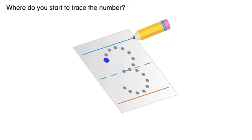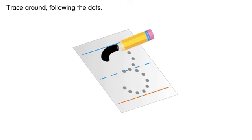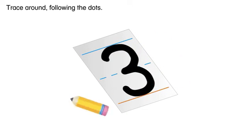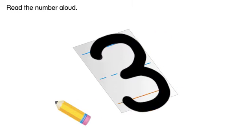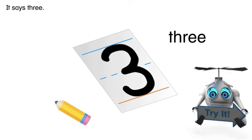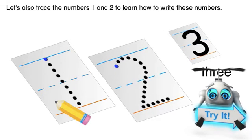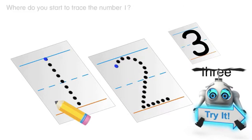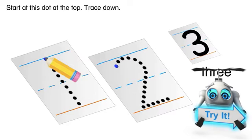Where do you start to trace the number? Number three. Start at the blue dot. Start at this dot at the top. Trace down.